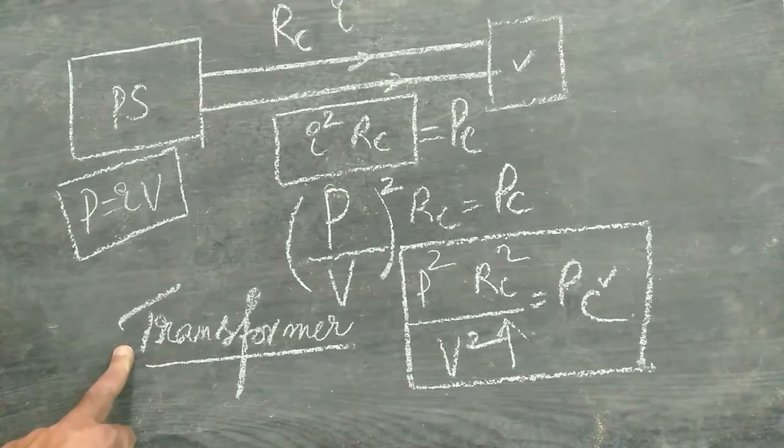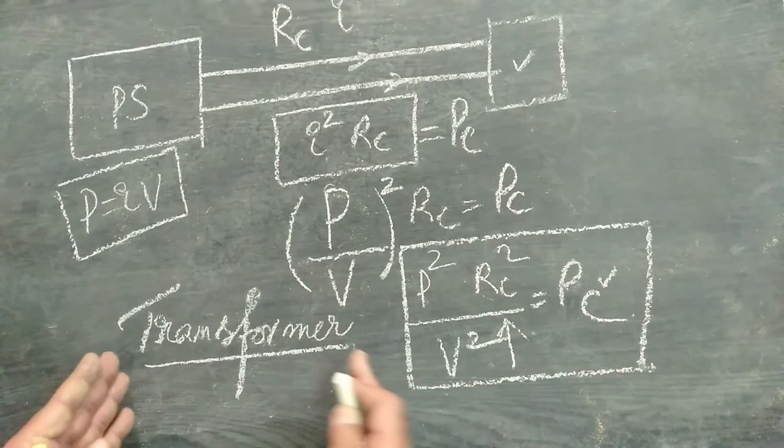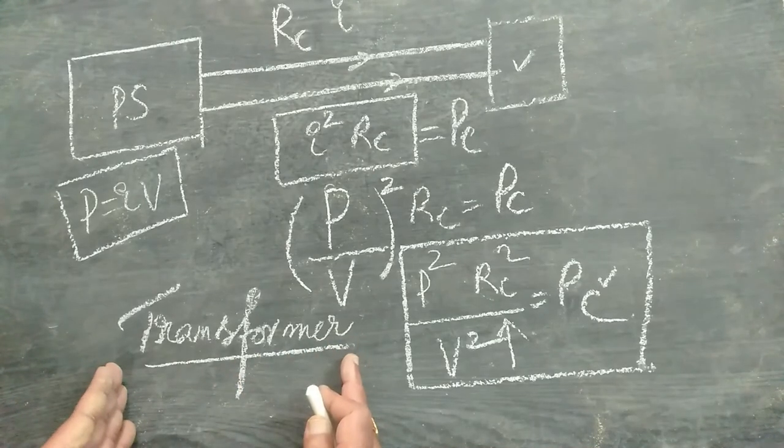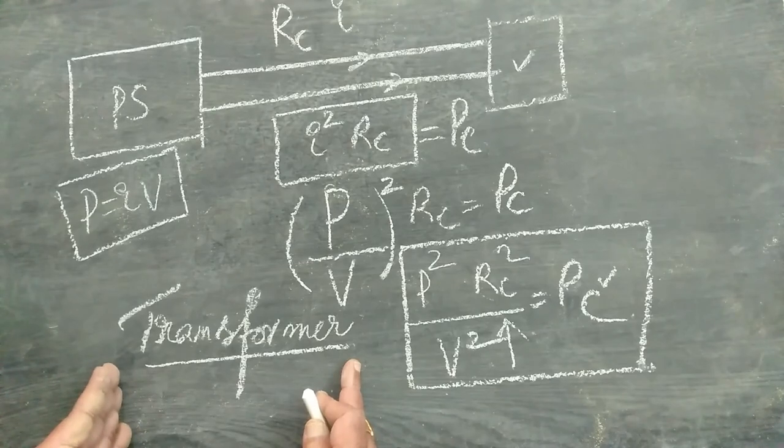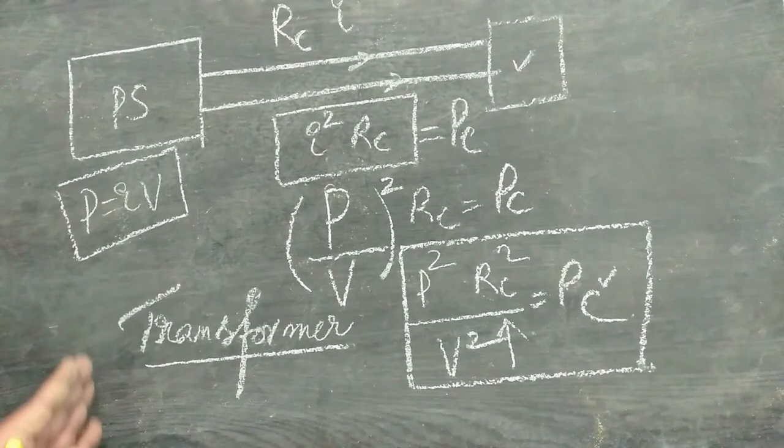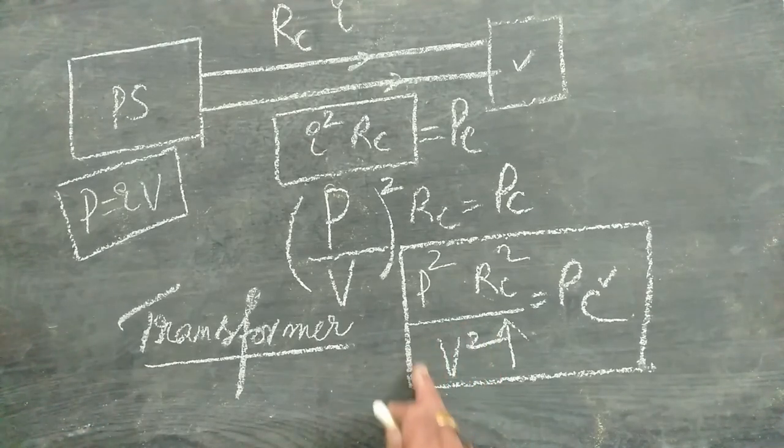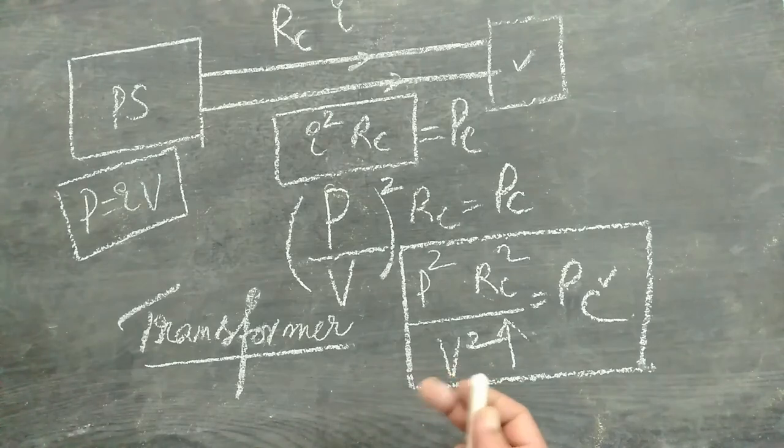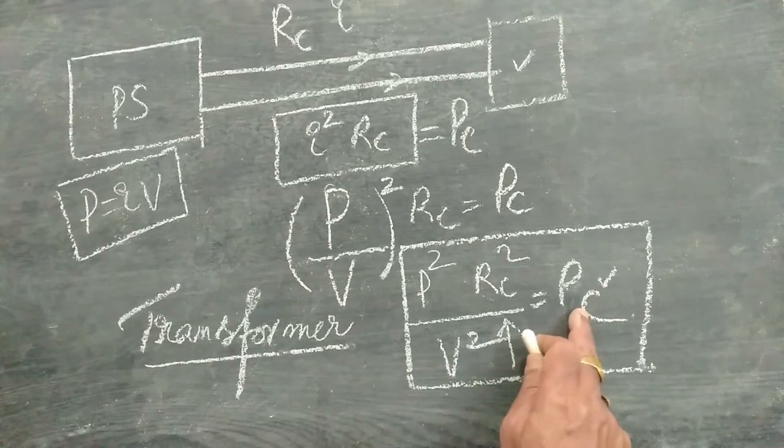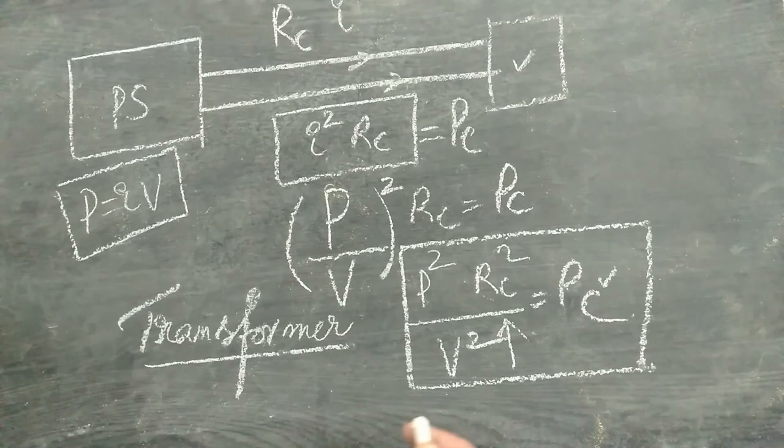The details of transformer we will be learning in the chapter alternating current. But just to explain, transformer is a device which maintains the power input and power output same, and it can alter the current. So that if it increases the current, the voltage remains dropped. If it can reduce the current, so that voltage can be increased. So transformer is capable of increasing or decreasing the voltages at the cost of increasing or decreasing the current. So by using this apparatus, this loss can be minimized. That is the reason why the advantage of AC, or rather AC is much more cheaper than the direct current. Anyway, we will talk about all these topics in the chapter alternating current.